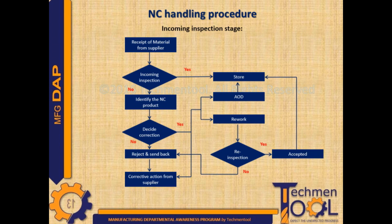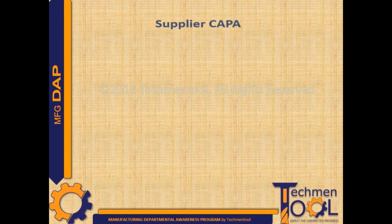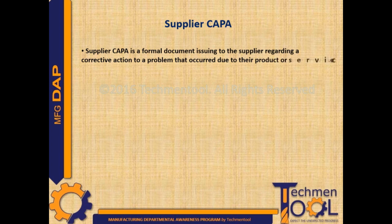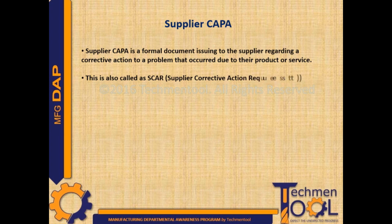The purchase department will communicate with the supplier regarding corrective action for the rejected NC product. The supplier has to take necessary actions about the rejected items at their end. They have to show this in terms of CAPA to the buyer, filling in information about containment action taken, root cause for the NCs, corrective action applied, and how they planned preventive action for potential problems. Supplier CAPA is a formal document issued to the supplier regarding a corrective action to a problem that occurred due to their product or service.